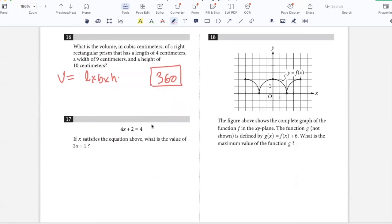If X satisfies the equation above, what is the value of 2X plus 1? If I take 2 common, then I have 2 times X plus 1 equals 4. So 2X plus 1 equals 4 by 2, which is 2.